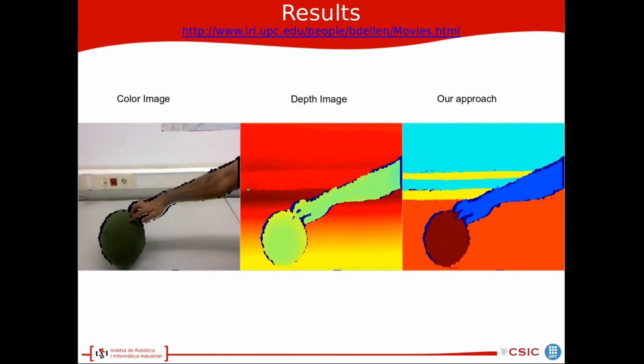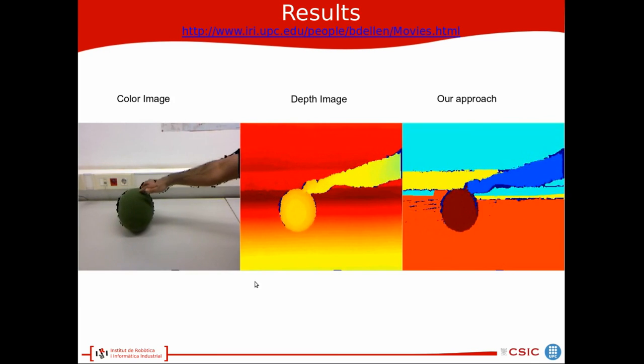This is the last example that we show in which a human hand is rolling a ball on the surface.